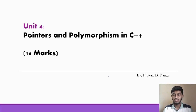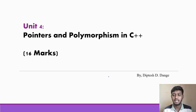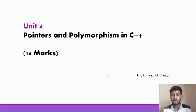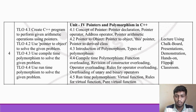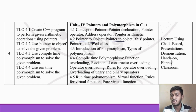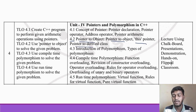Hello friends, welcome to this video. In this video we will see Unit 4: Pointers and Polymorphism in C++, and this is for 16 marks. My name is Diptej and I am teaching you Object Oriented Programming using C++. In this video we are going to cover point 4.2 — pointer to object, the this pointer, and pointer to a derived class. These three concepts are now very simple.